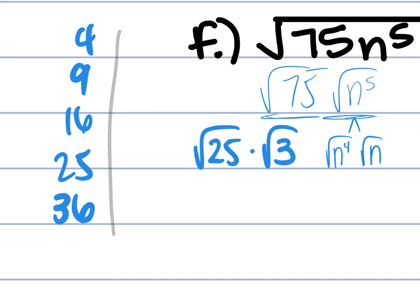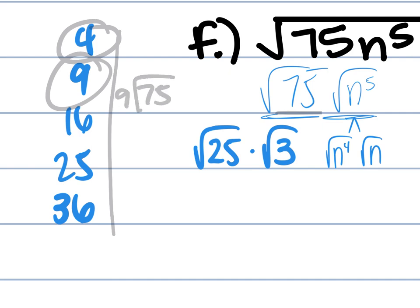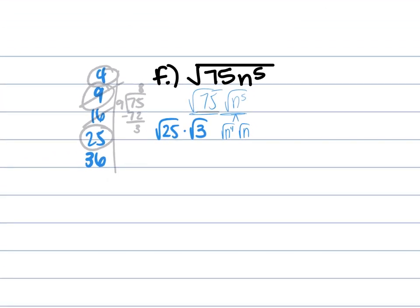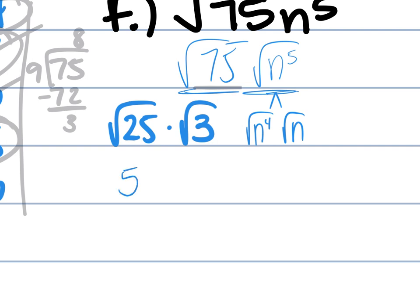When picking your perfect square factor, it has to go in evenly — no remainder. 4 is even, so it won't go into 75. 9: 75 divided by 9 gives 8 remainder 3, so it doesn't work. 16 is also even. Then you'd try 25, and 25 goes into 75 evenly. So the square root of 25 times the square root of 3 gives 5 times the square root of 3. The square root of n⁴ is n². Then the square root of n stays. Final answer: 5n² times the square root of 3n.